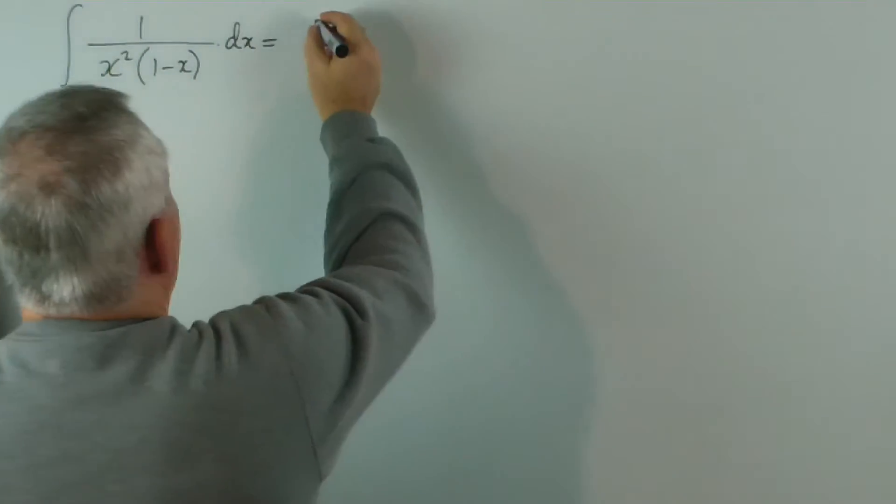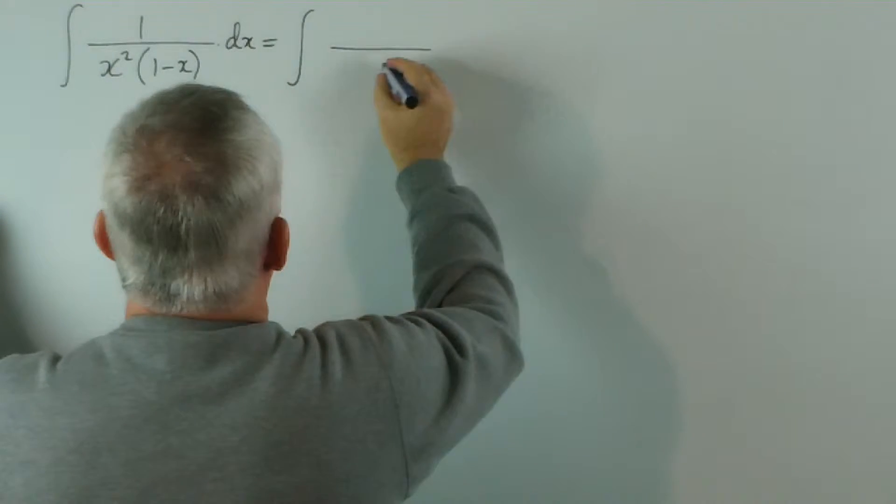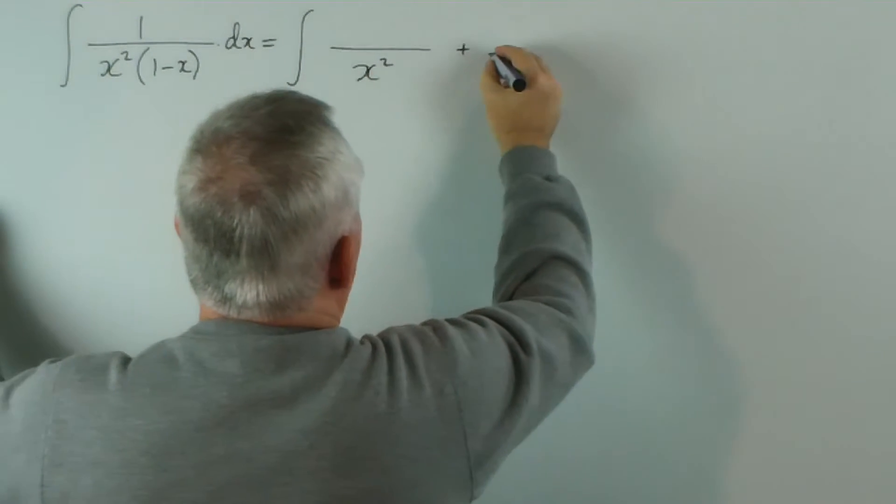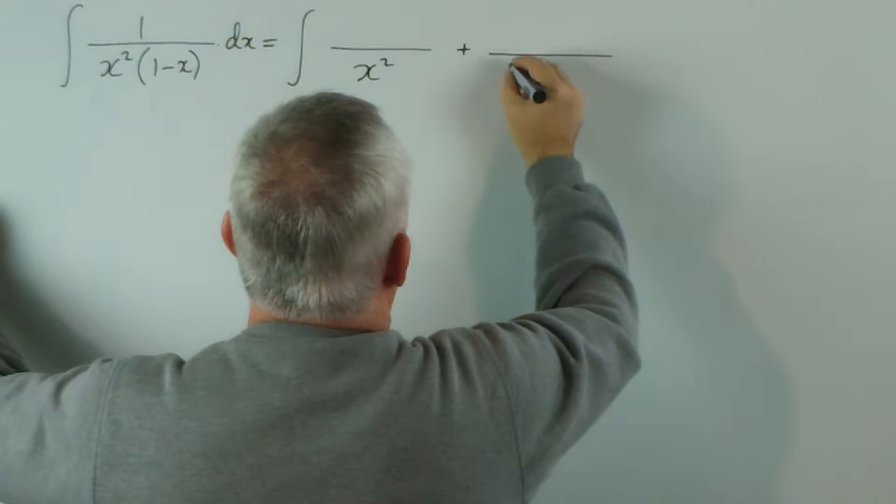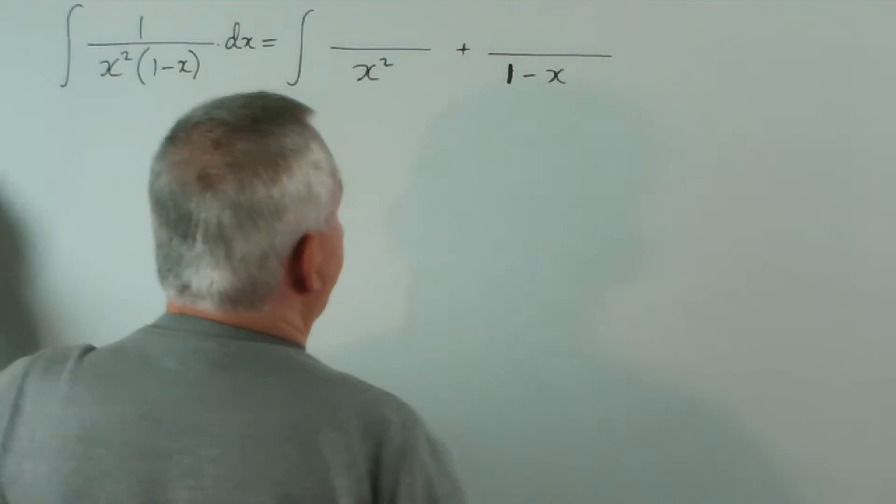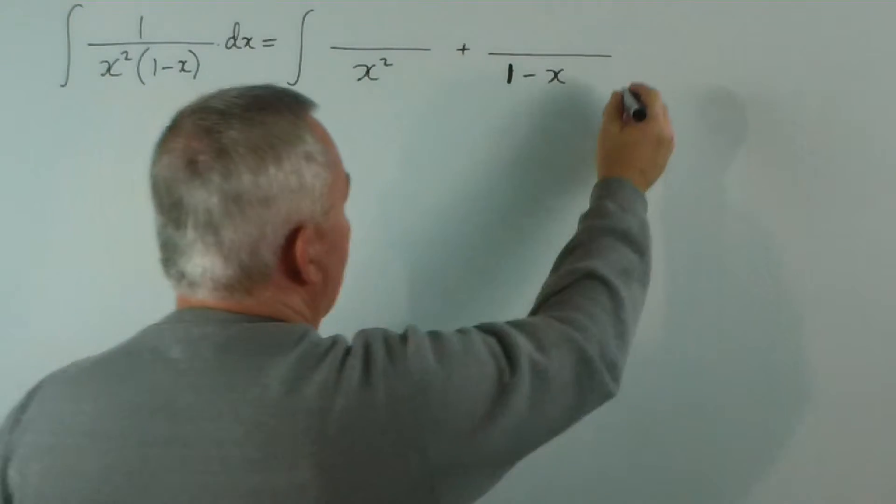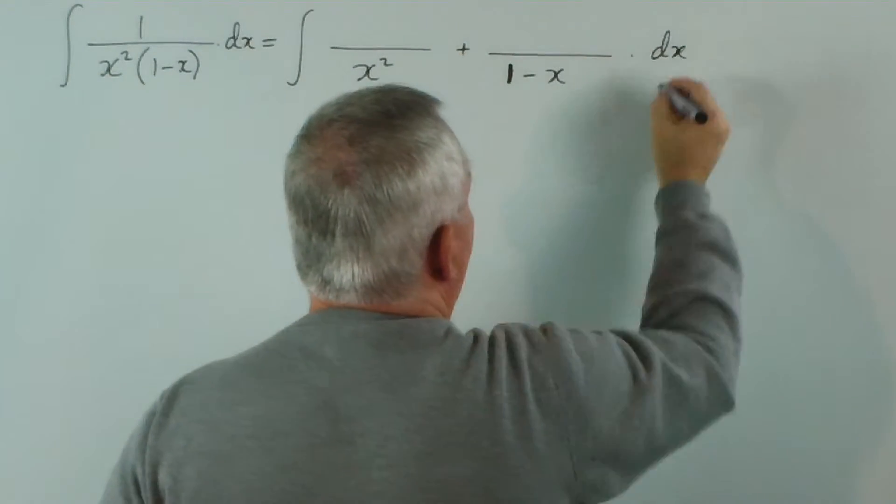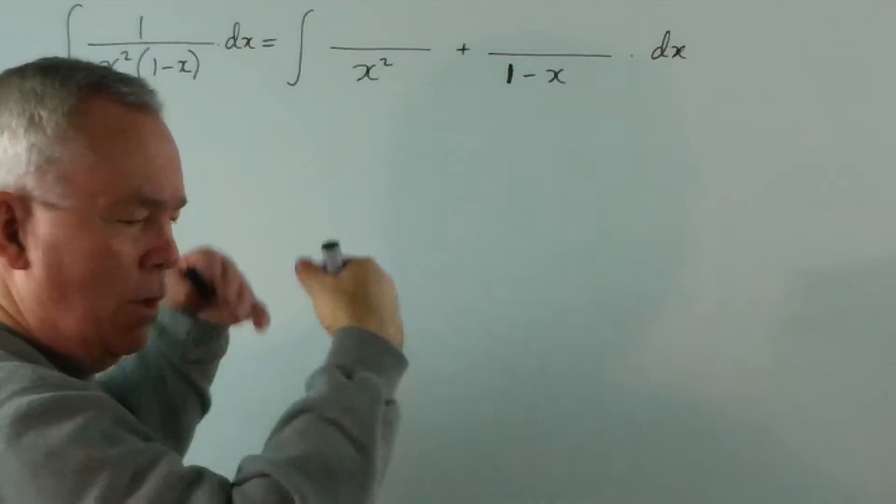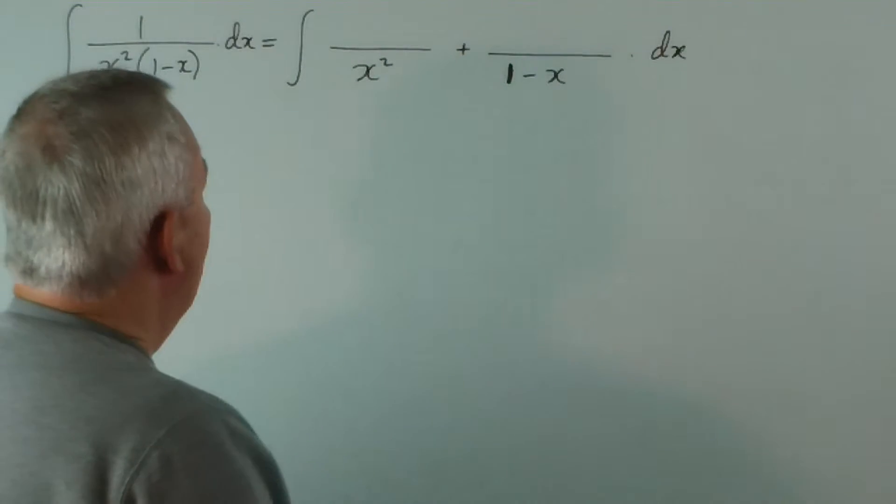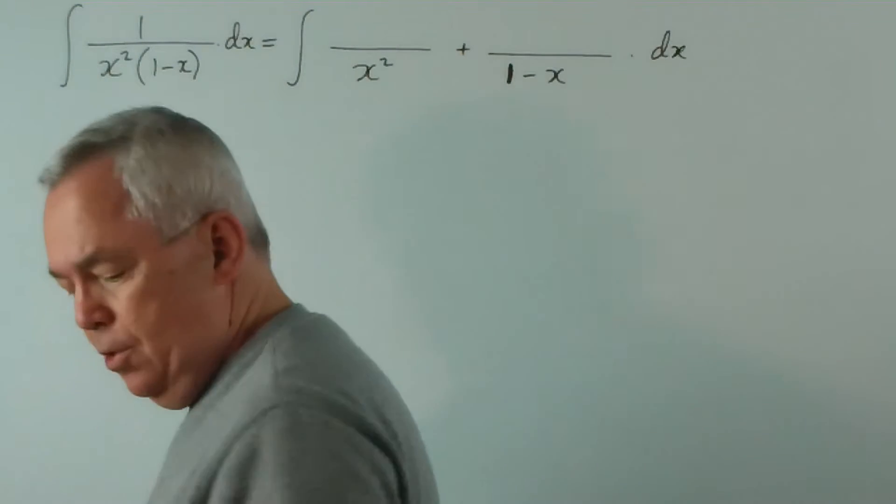So we could imagine separating it into two fractions. In order to work out what to put on top, we would... perhaps I should use a different colour.